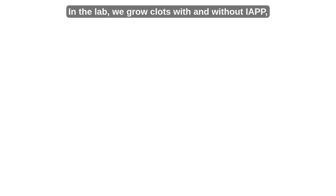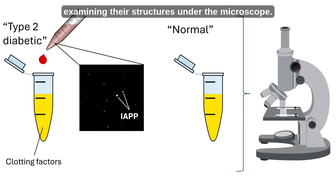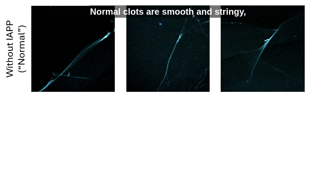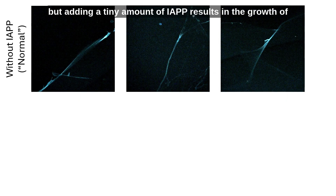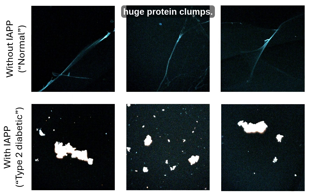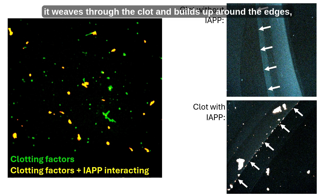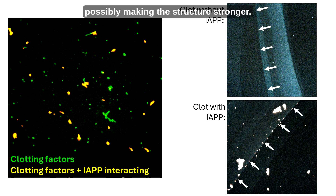In the lab, we grow clots with and without IAPP, examining their structures under the microscope. Normal clots are smooth and stringy, but adding a tiny amount of IAPP results in the growth of huge protein clumps. The IAPP doesn't just stick — it weaves through the clot and builds up around the edges, possibly making the structure stronger.